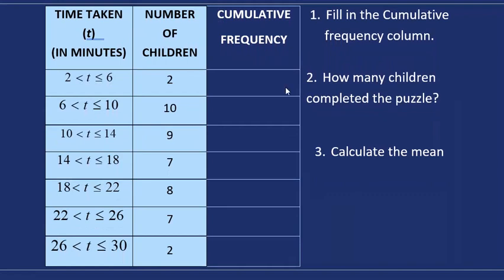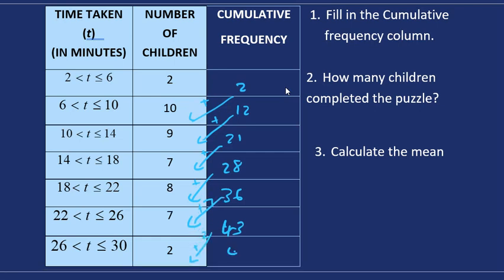Question number one, you need to complete the cumulative frequency column which is easy. We've got 2, then we add 2 plus 10 is 12, 12 plus 9 is 21, 21 plus 7 is 28, 28 plus 8 is 36, 36 plus 7 is 43, and 43 plus 2 is 45.